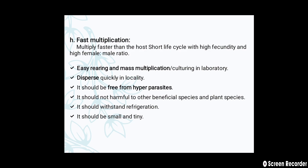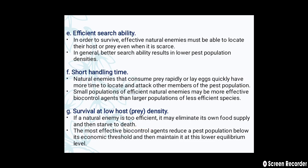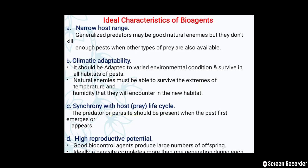These are the different characteristics of the bioagent or natural enemies. Additionally, they should allow easy rearing and mass multiplication or culturing in a laboratory, disperse quickly in a locality, be free from hyperparasites, not be harmful to other beneficial species and plant species, withstand refrigeration, and be small and tiny. These are the different ideal characteristics of natural enemies. Thank you so much.